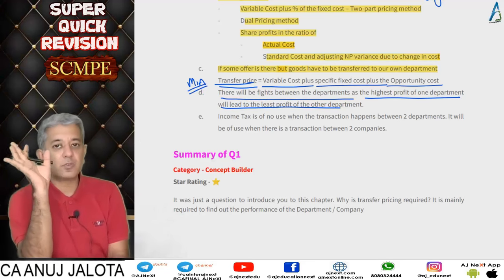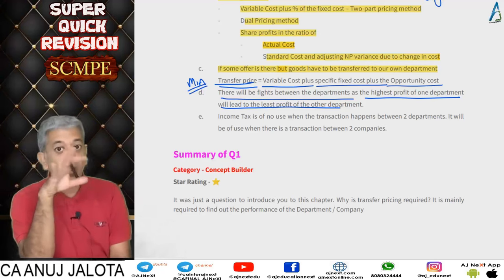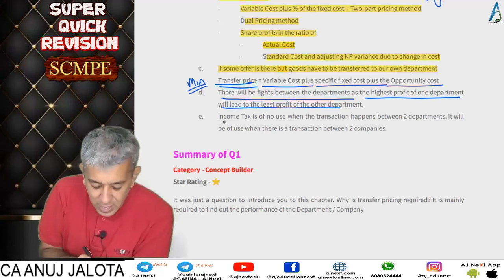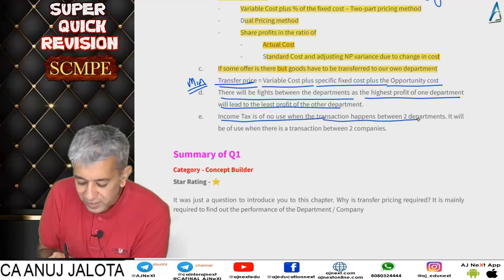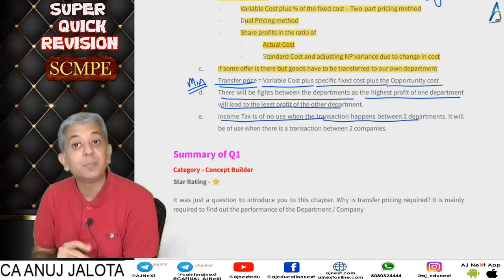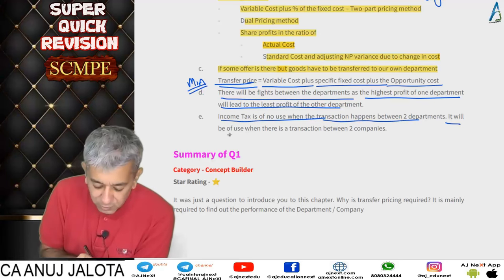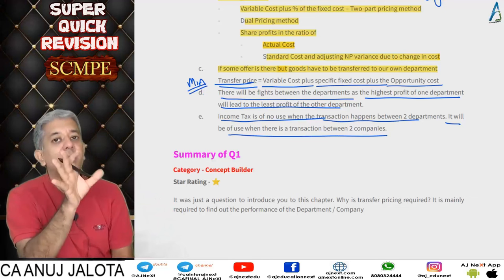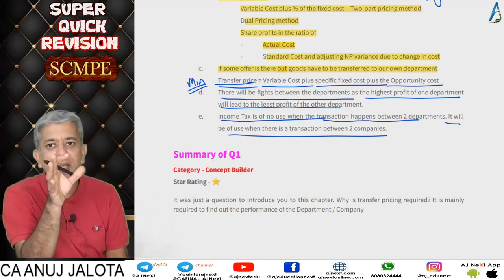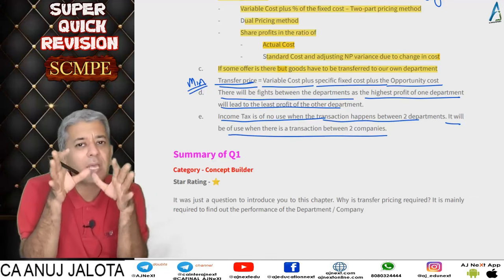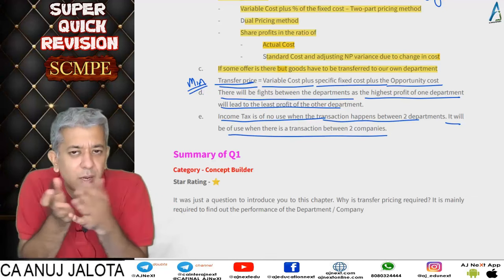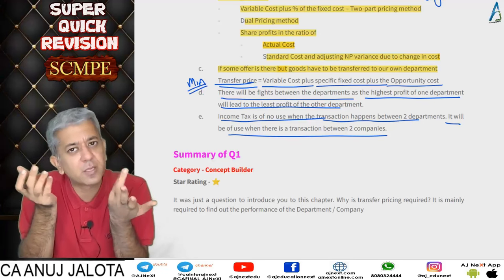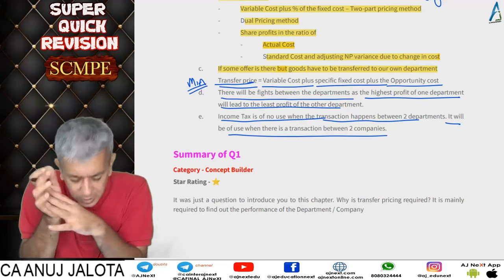Remember, there will always be fights between departments as the highest profit for one department always leads to the least profit for the other. There is no such thing as an ideal transfer price. Income tax is not relevant when transactions happen between two departments; it becomes relevant when there is a transaction between two related companies with different PAN numbers.